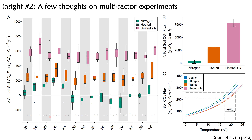A few thoughts on multi-factor experiments. After studying microbial and biogeochemical responses in the single-factor experiments, we became quite interested in what we would see when looking at the interactions between nitrogen and warming, because we were seeing quite contrasting results in those two single-factor experiments. We set up this multi-factor experiment, and I'm showing the first 13 years of data here using annual soil CO2 flux as our ecosystem parameter.